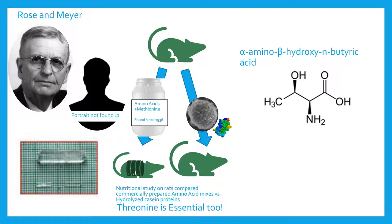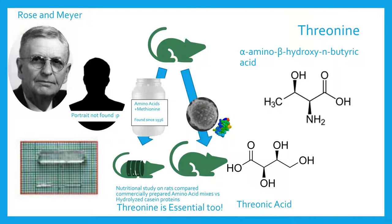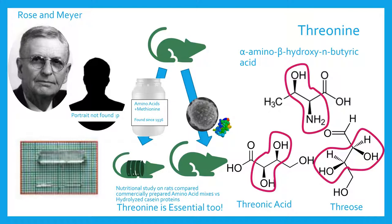He named the compound alpha-amino-beta-hydroxy-N-butyric acid. The name threonine comes from the compound threonic acid, which in turn got its name from the four-carbon sugar threose. These three chemicals share a chemical structure wherein two central carbons each branch off with a hydroxyl group and/or an amino group in a syn configuration. This naming of bond orientation merits its own video for another time.